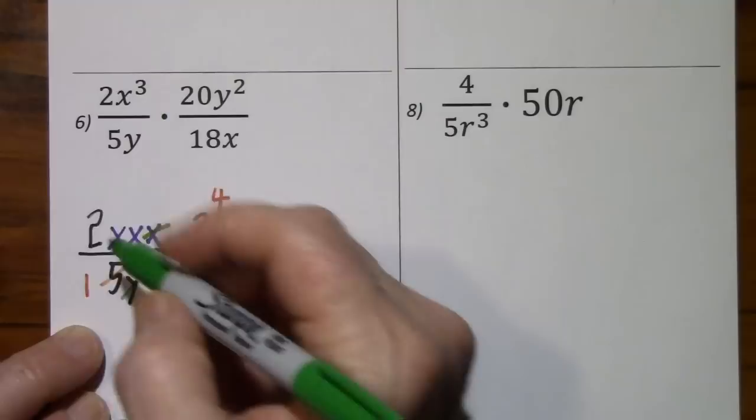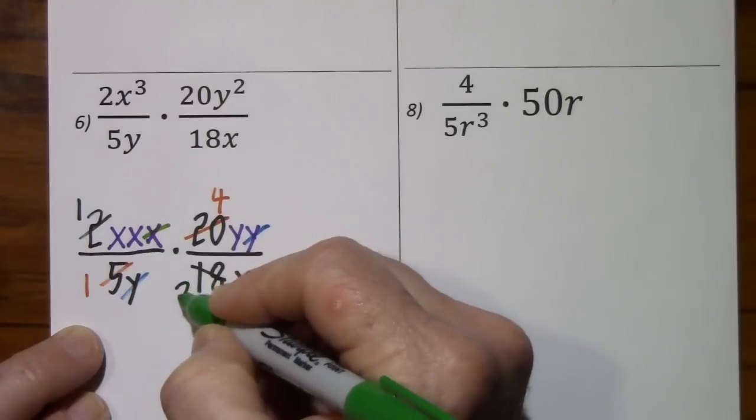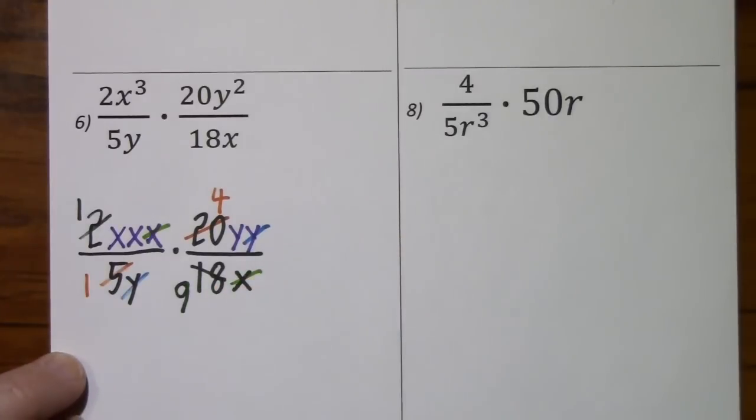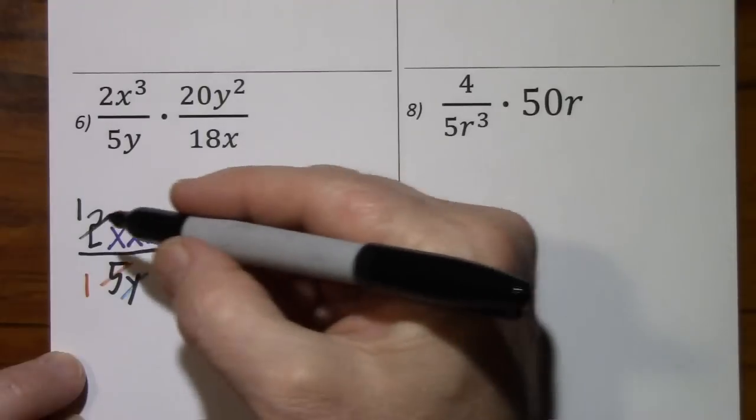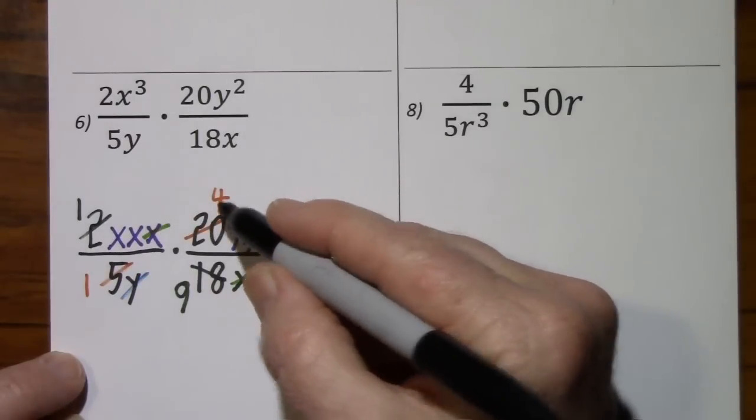With the two and the 18, two goes into two once, two goes into 18, nine times. So we're left with x squared, a y, and a four.